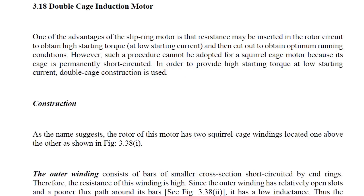First, we will discuss the double cage induction motor. One advantage of the slip ring motor is that resistance may be inserted in the rotor circuit to obtain high starting torque with low starting current, and then cut out to obtain optimum running conditions. In the slip ring type induction motor, we can connect external rotor resistance in the rotor circuit to improve the starting torque, since torque is directly proportional to E2·I2·cos(φ2). By adding rotor resistance, we improve the power factor, and due to this increase in power factor, the starting torque is improved.